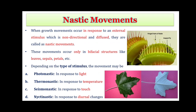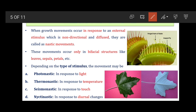When growth movement occurs in response to an external stimulus which is non-directional and diffuse type, then it is called a nastic movement. This movement is shown by a bifacial structure like leaves, sepals, and petals. A bifacial structure has a dorsal surface (adaxial surface) and a ventral surface (abaxial surface) — both surfaces are different from each other. Because such structures have two distinct faces they are known as bifacial structures, and only such organs exhibit nastic type of movements.